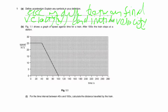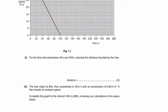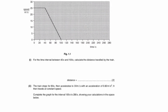For part B of this question, they have given a speed-time graph for a train. After 100 seconds the train stops at a station. Part one asks: for the time interval between 40 seconds and 100 seconds, calculate the distance traveled by the train.